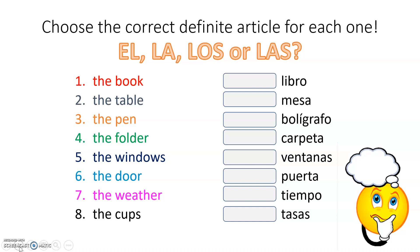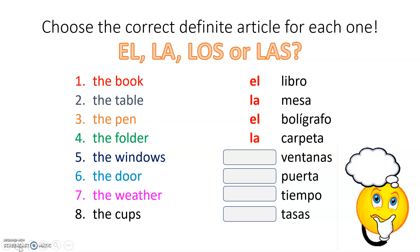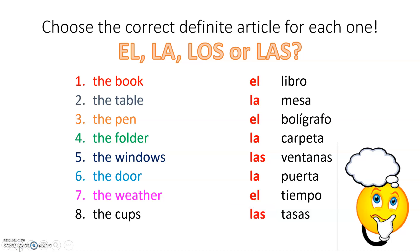So here we go. The book — el libro. The table — la mesa. The pen — el bolígrafo. The folder — la carpeta. The windows — las ventanas. The door — la puerta. The weather — el tiempo. And the cups — las tazas. El, la, los, and las — all meaning 'the.'